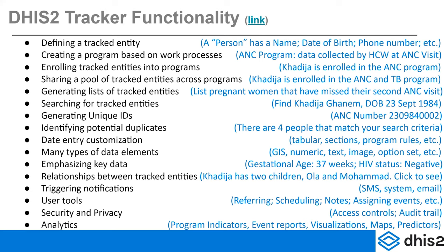Relationships between tracked entities allow you to follow the thread from a mother to her children's records. This can be very useful, for example, for a healthcare provider to pull up a family and go through their records when doing a village visit.